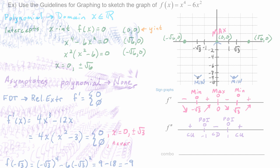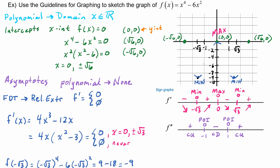Adding the inflection points to the graph: at (-1, -5) and (1, -5), we mark the points of inflection. We're now very close to being able to draw the complete graph.